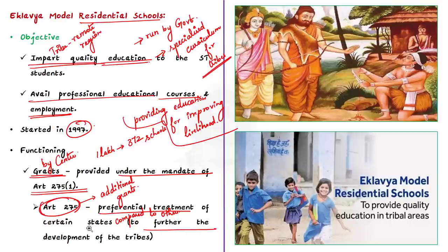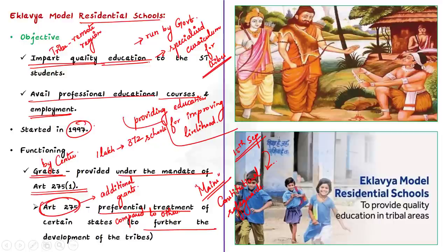We are discussing Article 275 here because you can quote this article in your mains answer to questions relating to constitutional safeguards for tribals. In the 15th September 2022 Hindu News analysis, Balaji sir discussed constitutional provisions for scheduled tribes — you can add Article 275 to those constitutional safeguards as well.